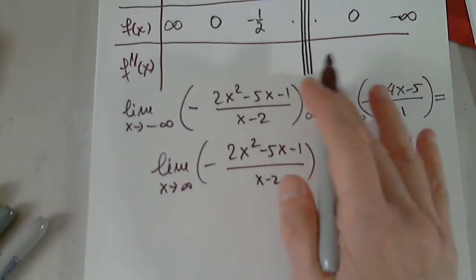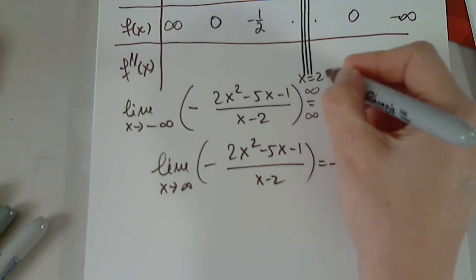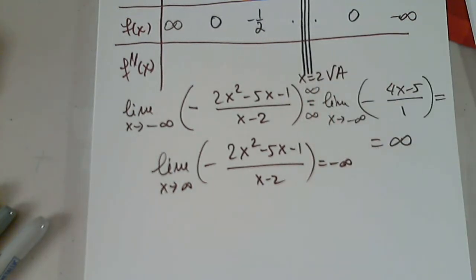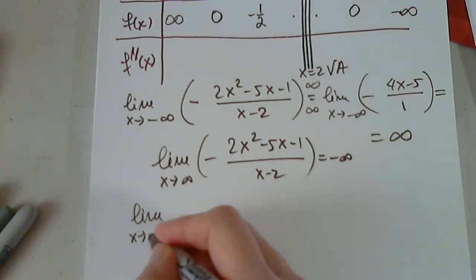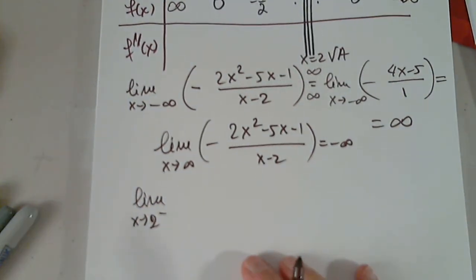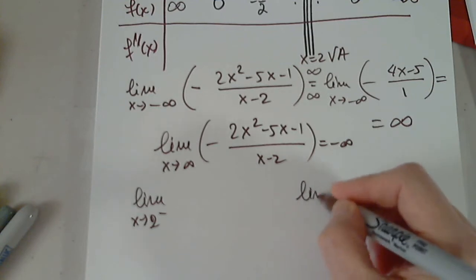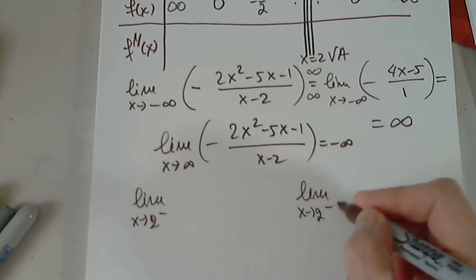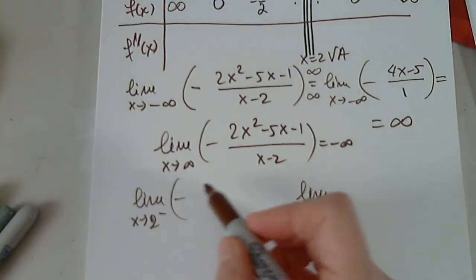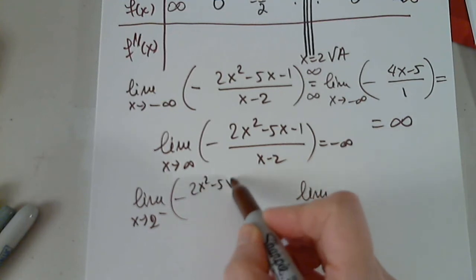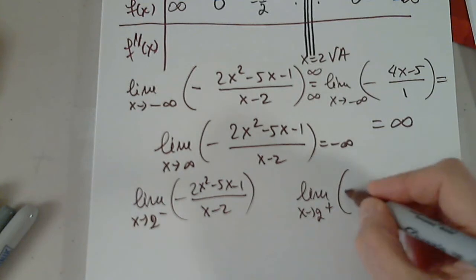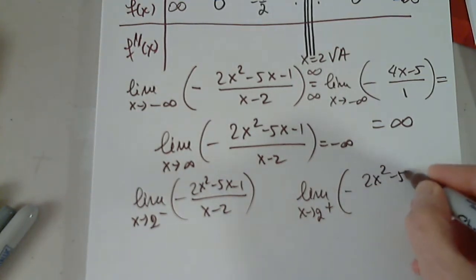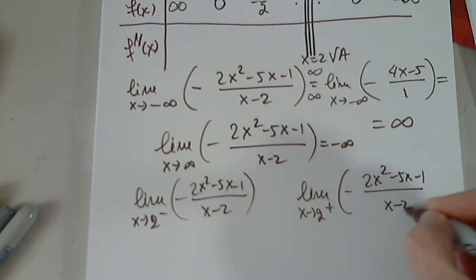I only need the limits left and right to show that x equals 2 is a VA, for sure. But I need those. Limit as x approaches 2 from the left, and limit as x approaches 2 from the right. Negative 2x squared minus 5x minus 1 over x minus 2.